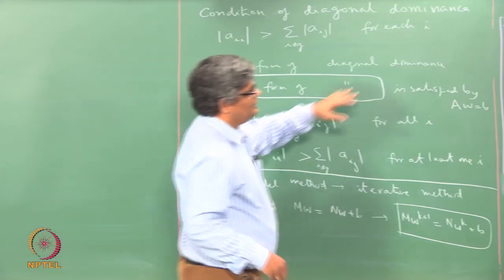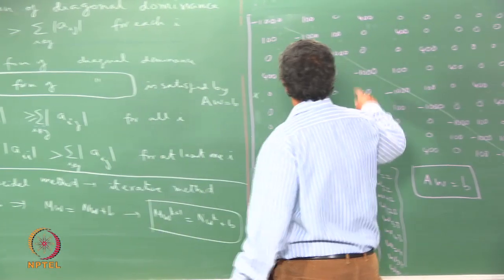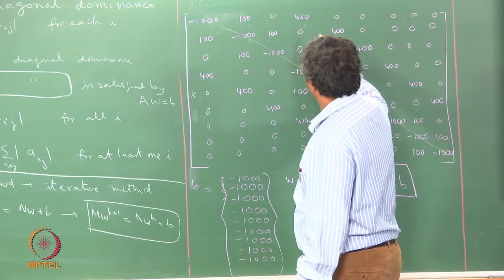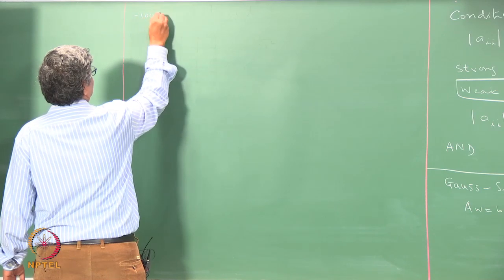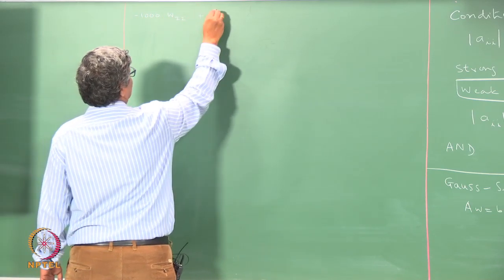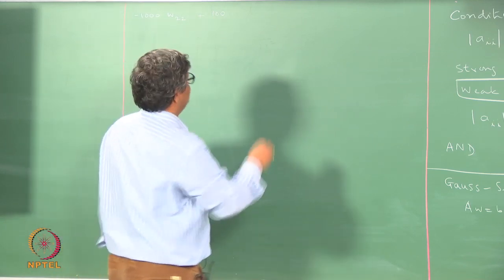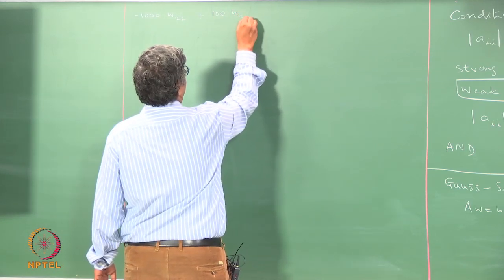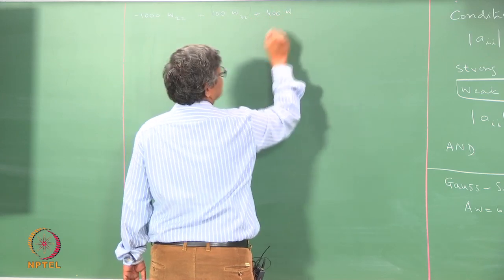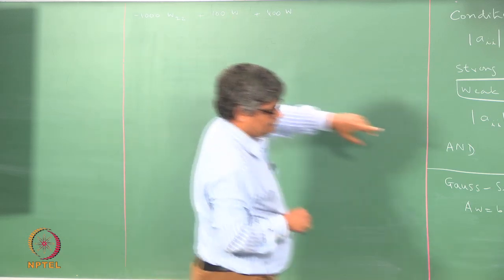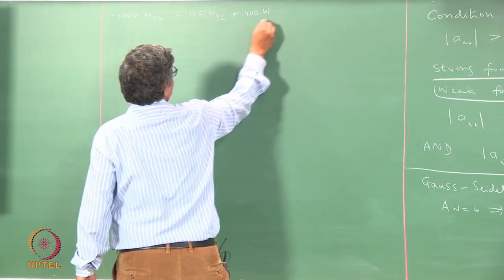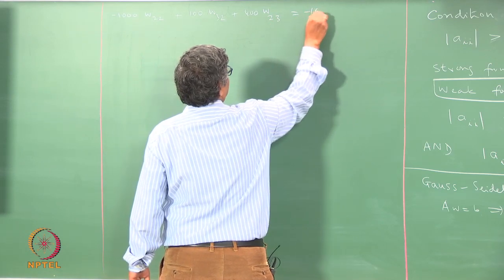What we actually do is take each equation and put the diagonal term on the left-hand side. Starting with the first equation for w22: minus 1000·w22 plus 100·w32 plus 400·w23 equal to minus 1000.